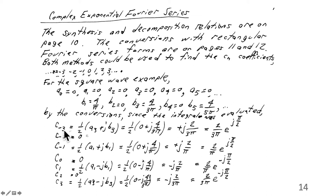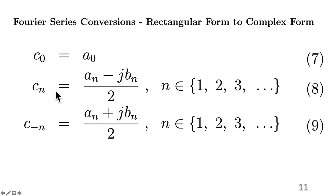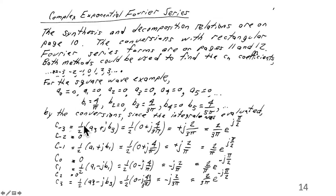The c minus 3 coefficient is one half times (a3 plus j·b3). For n equals 3, c minus 3 would be (a3 plus j·b3) divided by 2. So c minus 3 is one half times (a3 plus j·b3). The a3 is 0, b3 is 4 over 3 pi, and so we get j times 2 over 3 pi.